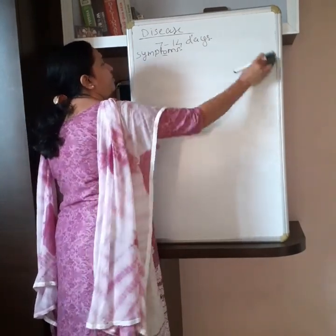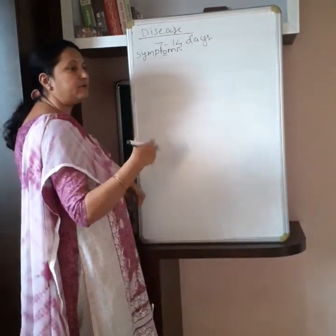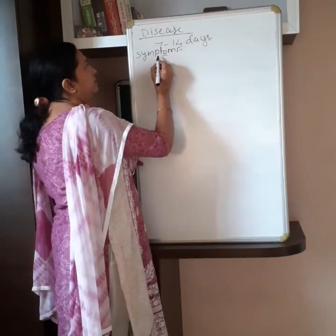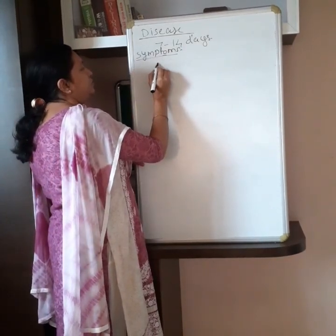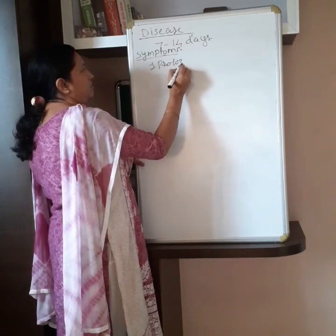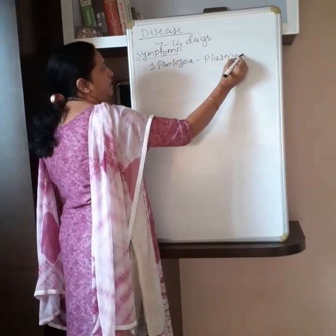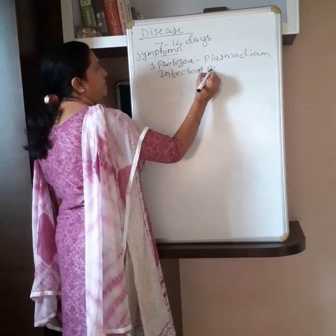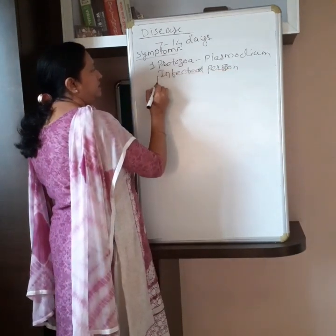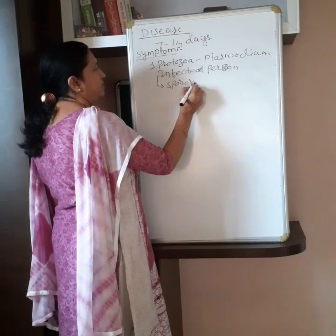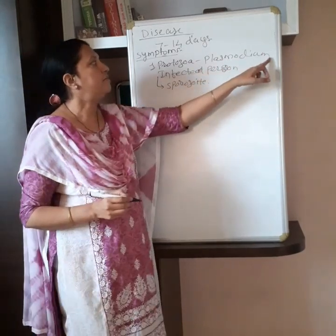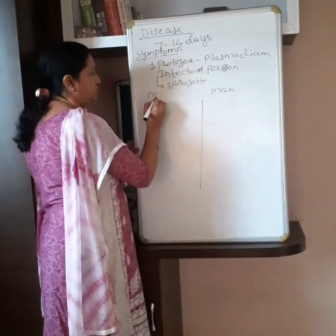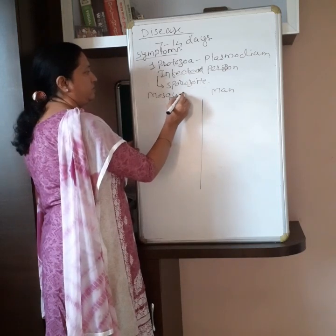Now see the mode of transmission of malaria — how it transmits from one person to another. The Plasmodium protozoa is present in the blood of an infected person. This Plasmodium completes its life cycle into two hosts — that is the man and the mosquito. The stage of Plasmodium present in the infected person's blood is called sporozoite. This sporozoite is present in the salivary gland of the mosquito.